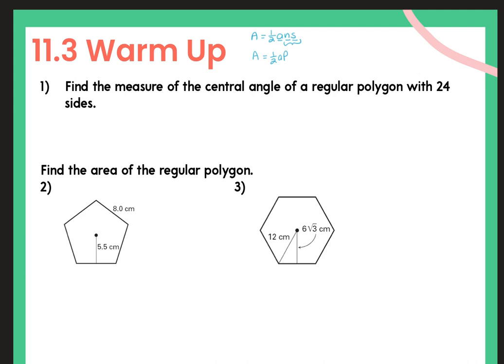Number 1 says find the measure of the central angle of a regular polygon with 24 sides. This is just the central angle. To find the central angle, we do 360 divided by the number of sides. And 360 divided by 24 is 15 degrees.